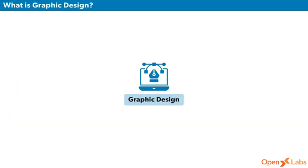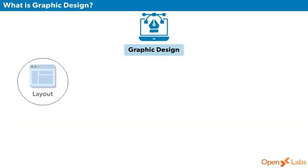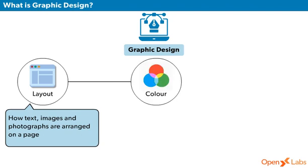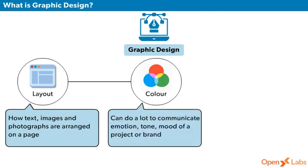The main aspects of graphic design are: Layout, which refers to how the text, images, and photographs are arranged on a page. Color, which helps to communicate emotion, tone, and mood of a project or brand.